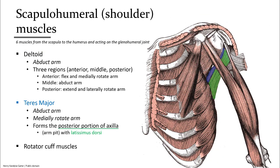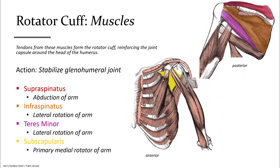From the anterior view, we can see the teres major in blue alongside the latissimus dorsi in green. Rotator cuff muscles are a group of four muscles that help hold the head of the humerus in the glenoid cavity or fossa. Thus, these muscles help to stabilize the shoulder joint, and their position also lends them to help initiate various movements.